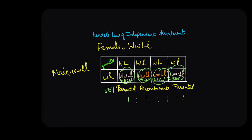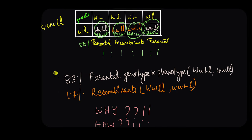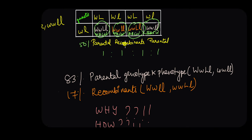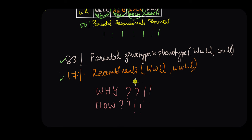But the results that he obtained shocked him. Instead of observing 50% parental and 50% recombinants, Morgan observed that 83% of the population had the parental genotype and phenotype, and only 17% had the recombinant phenotype. He was quite shocked that these traits were not following Mendel's law of independent assortment, and he began to wonder why.